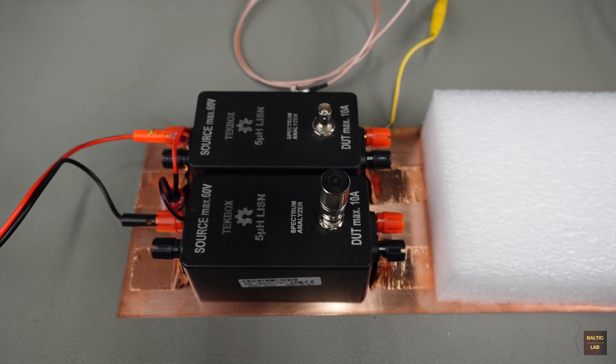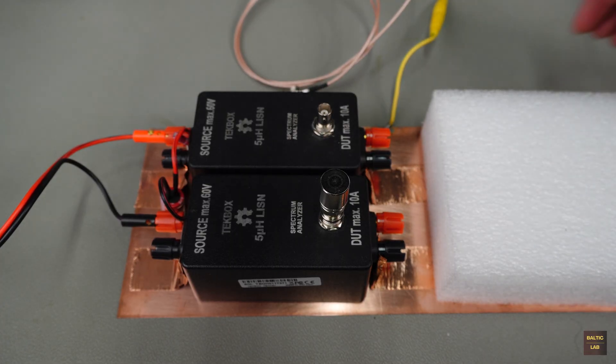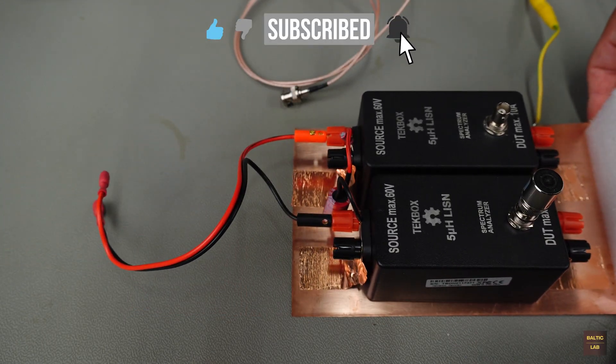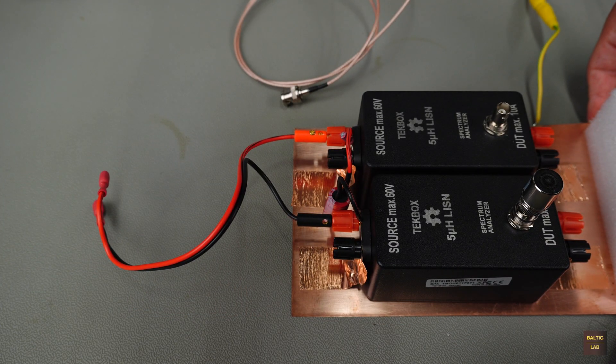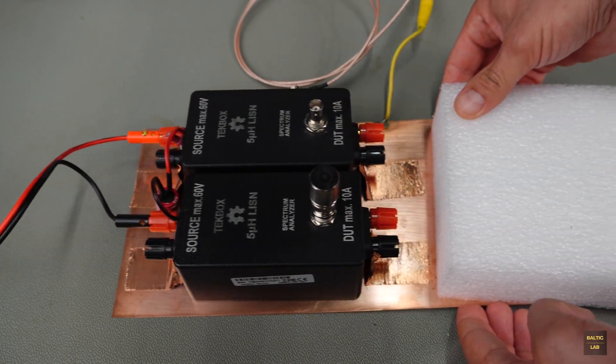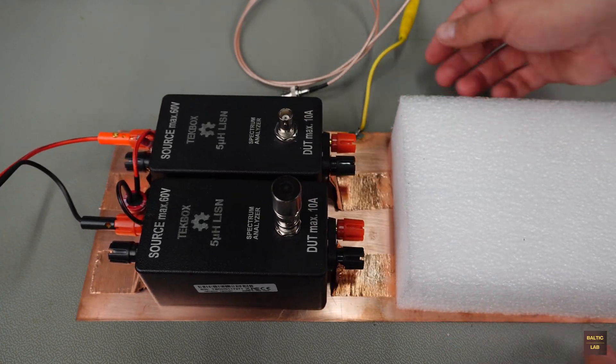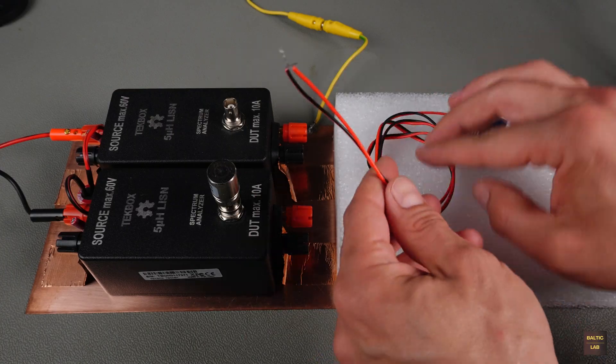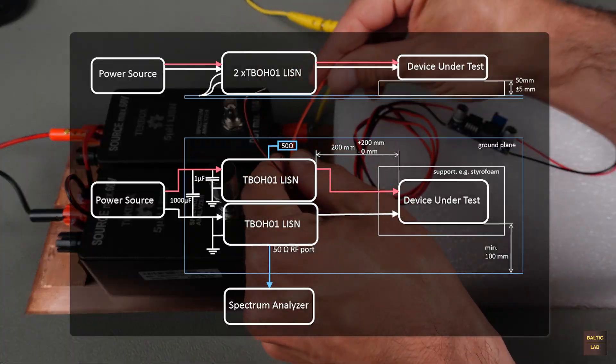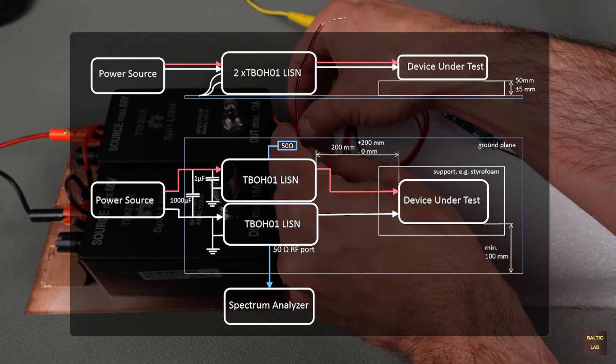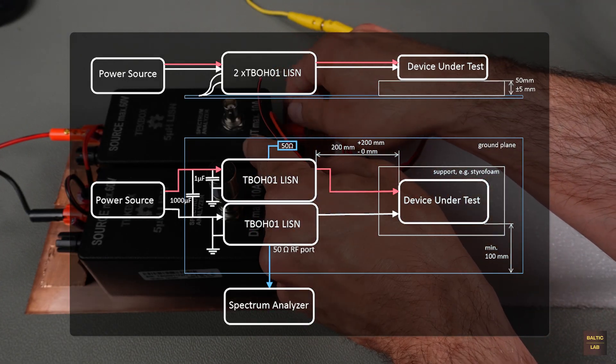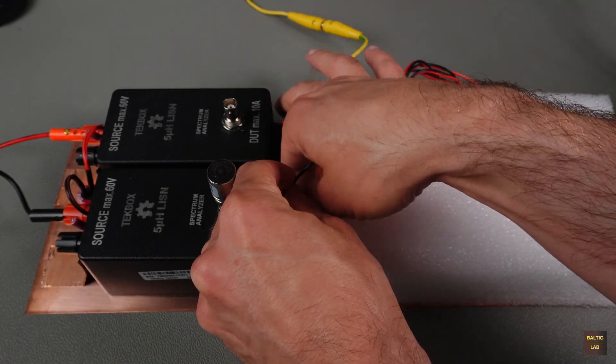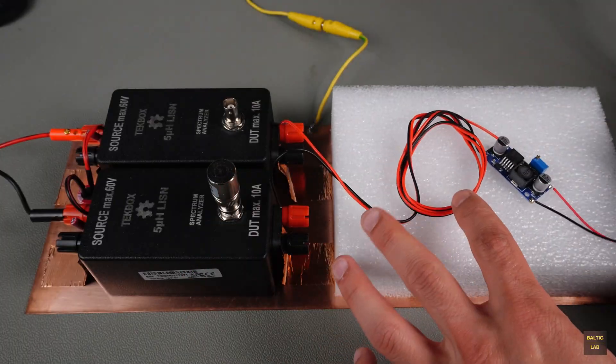For the test setup, I use a symmetrical, largely standard compliant configuration with two LISENs. Both LISENs are mounted on a grounded copper plate. As specified in the standard, they are conductively connected to the plate and equipped with the required input capacitors. Since the copper plate available in my home office is a bit small, I can't fully maintain the required minimum distances and cable routing rules. But with the massive limit violations we're about to see and considering the relative nature of the filtering effectiveness we'll later assess, that's not a big issue.